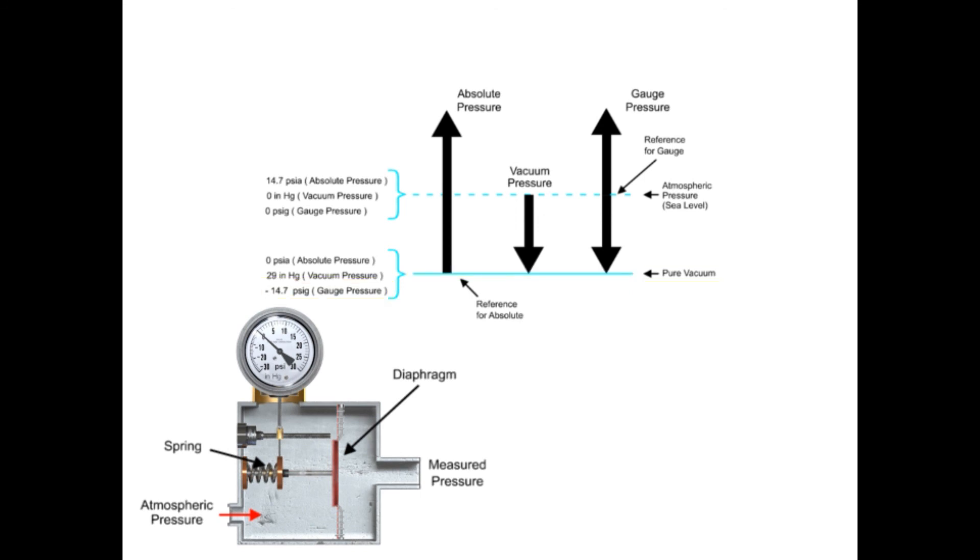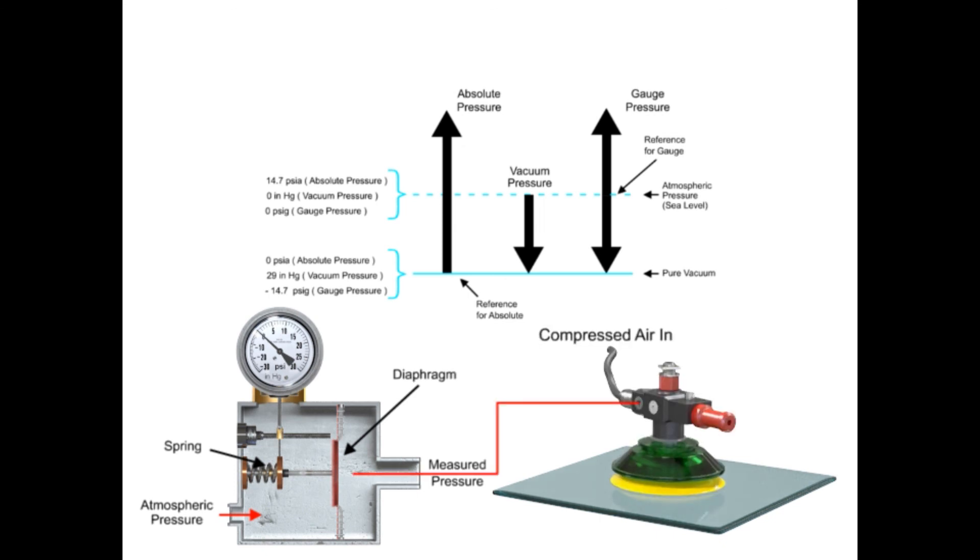Typical negative pressures include material handling of glass sheets using a vacuum gripper where air is evacuated from the suction cup.